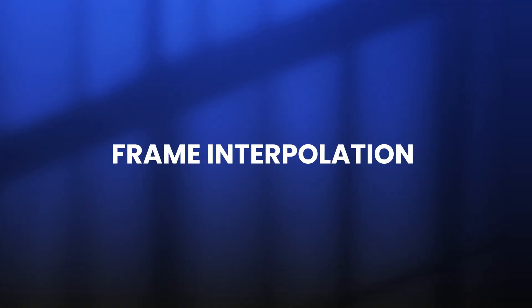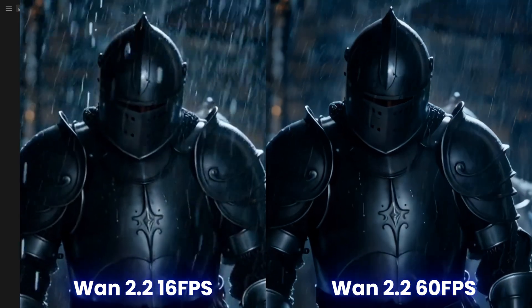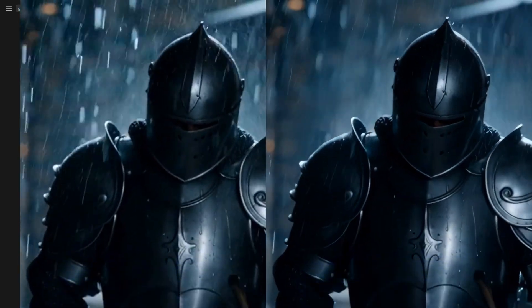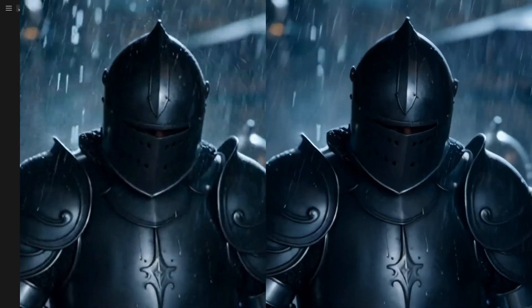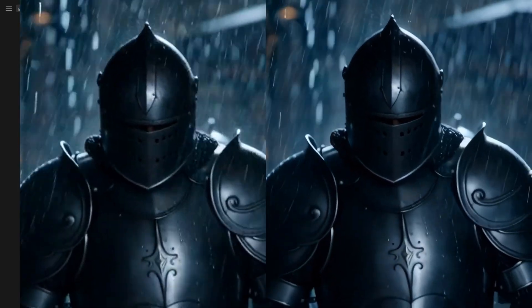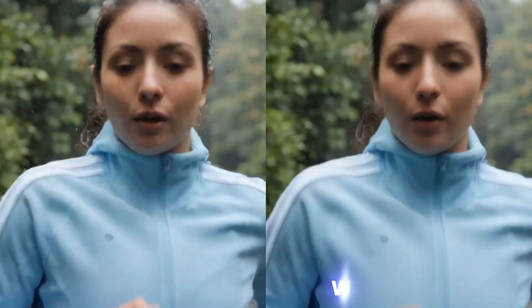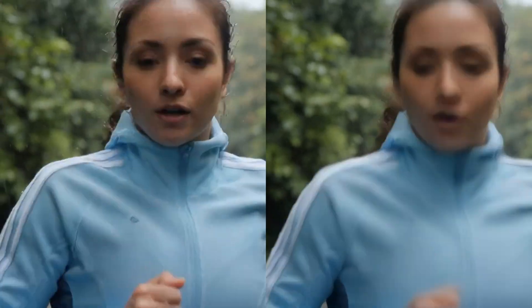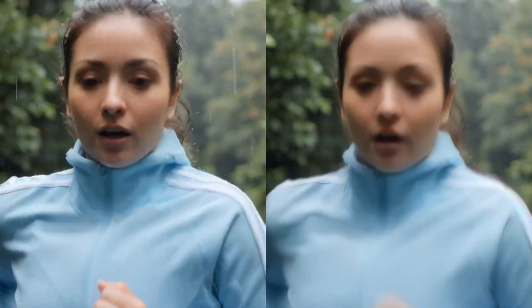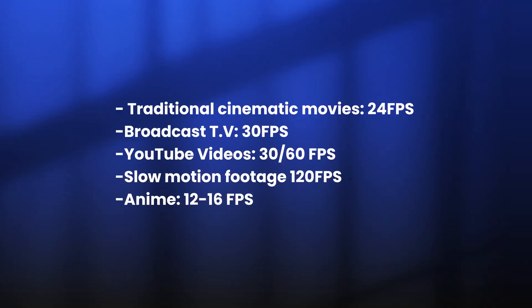Now let's talk about frame interpolation. Generally, what this does is help to smoothen out footage. So if you're going from something like 16 frames per second to 30 or 60, this feature creates artificial frames in between to increase the frames per second and visually gives it a smoother output. Most cinematic movies are shot in 24 frames per second.